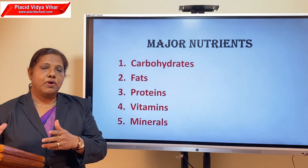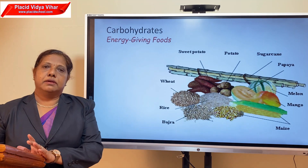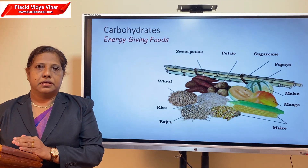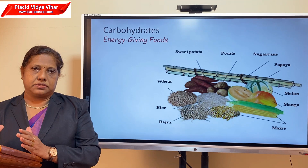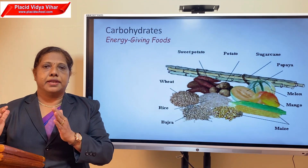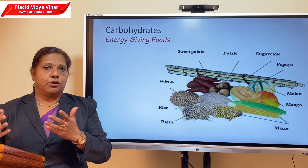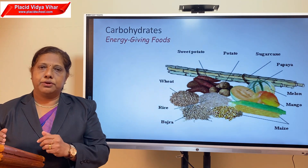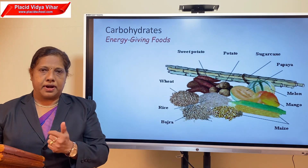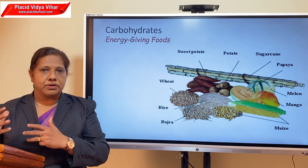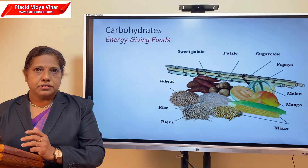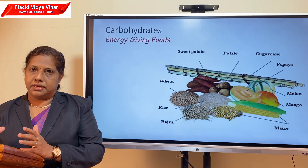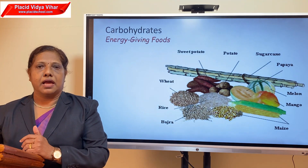Now we can think about what these nutrients do for our body. First, carbohydrates — carbohydrates are also called energy-giving foods because they give energy to our body. You need a lot of energy for doing your various life activities. As children you want to study, play, walk, and run, so you have to do a lot of work. For all these activities we need energy. Carbohydrates are present in food in the form of sugars and starch.